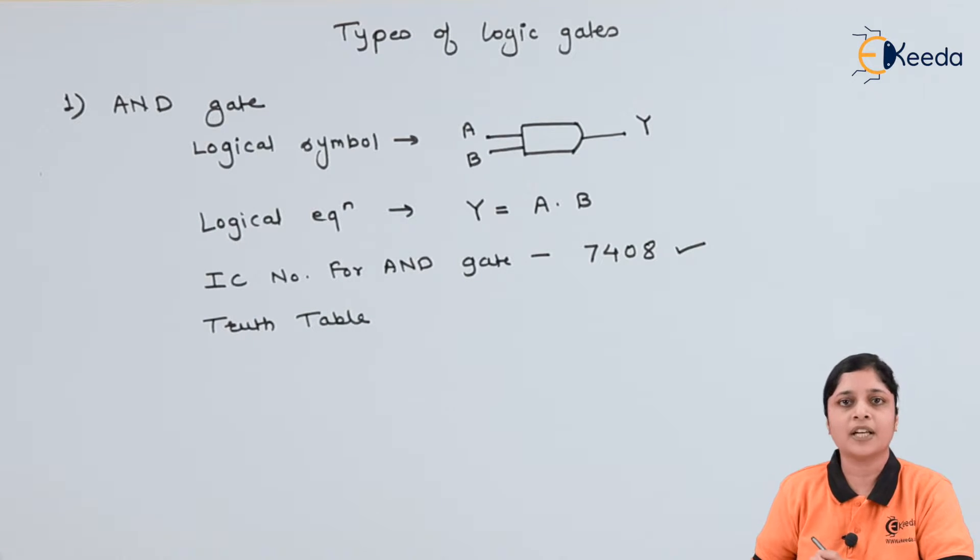You should remember IC number for all logic gates. This is number for the logical AND gate. Truth table for the AND gate. Now here two inputs are there, so possible combinations for two inputs are 4.